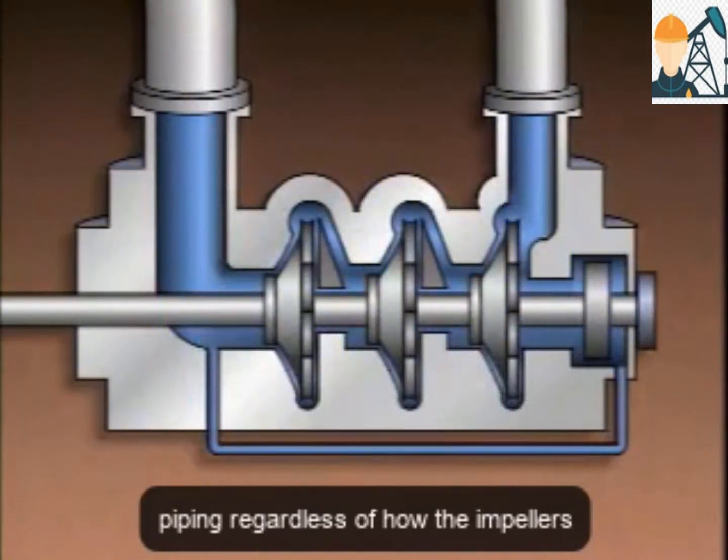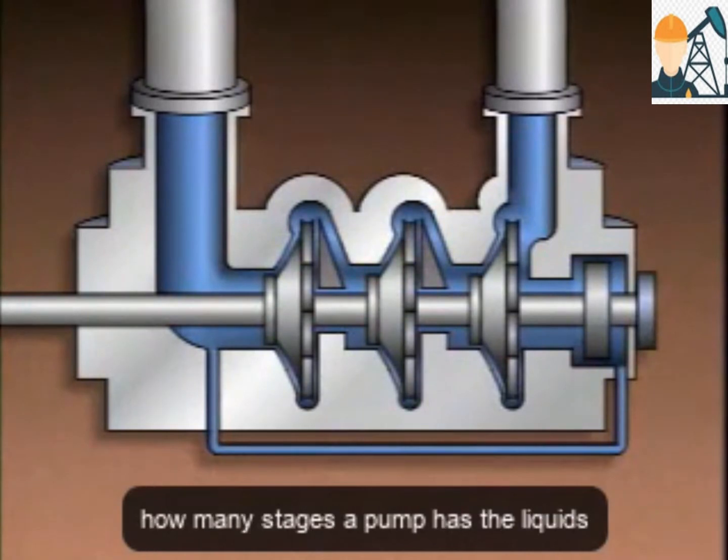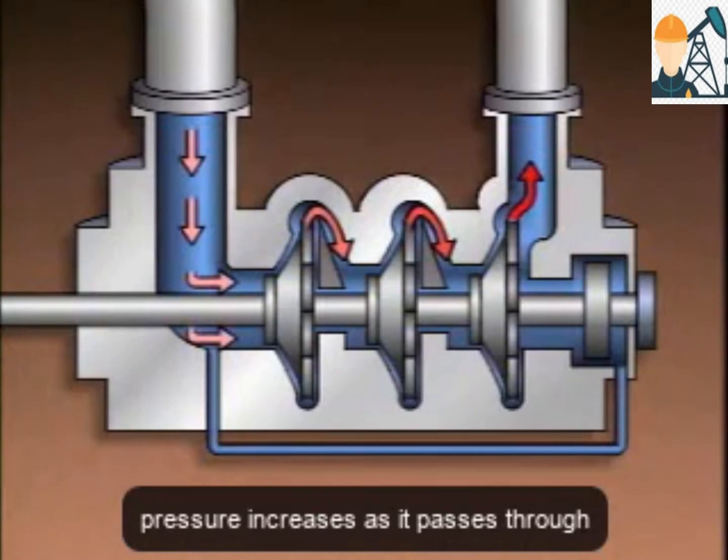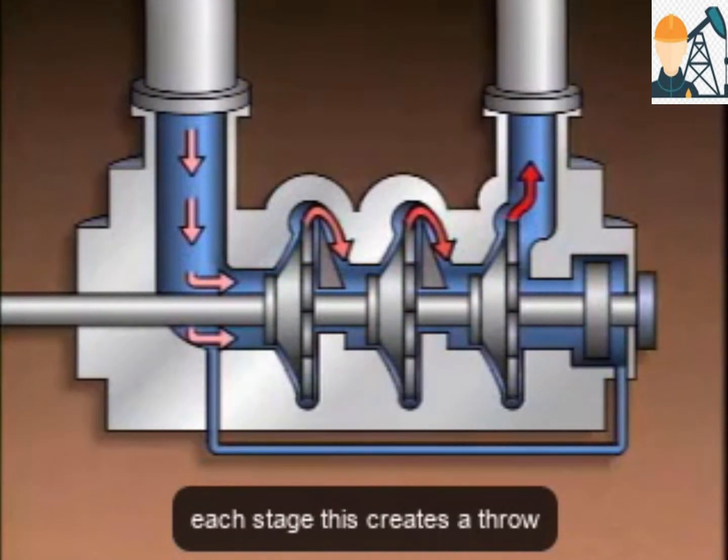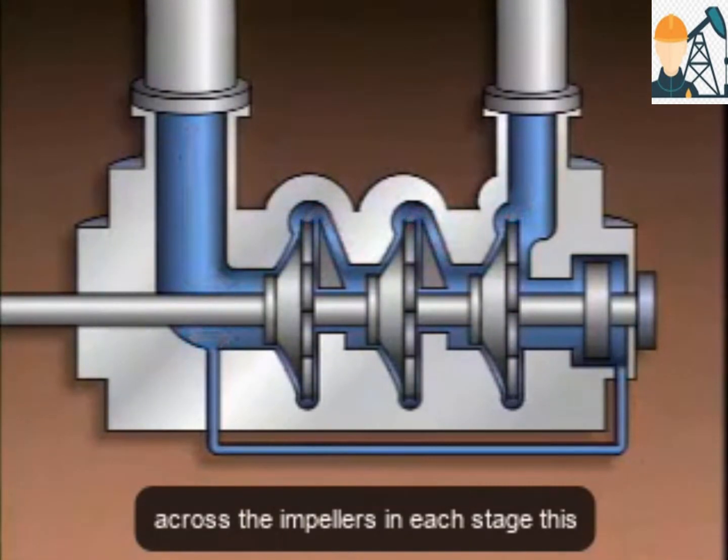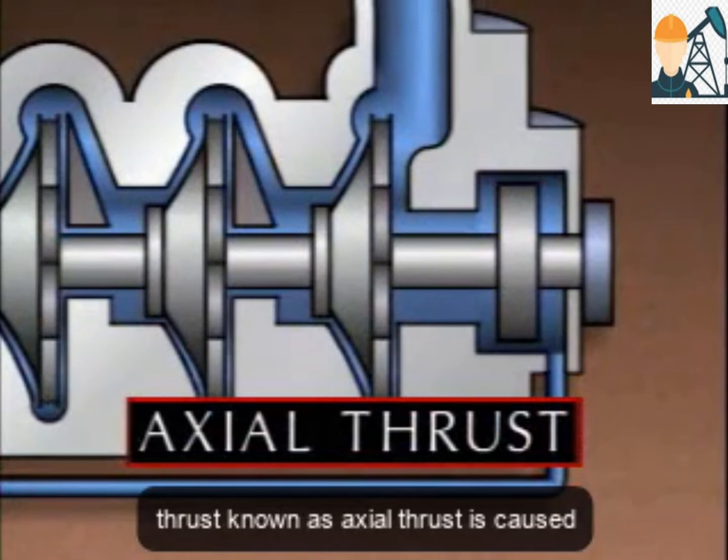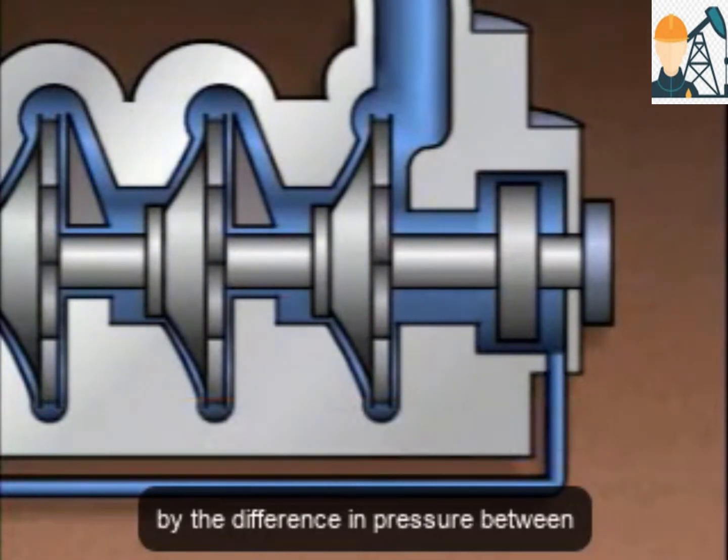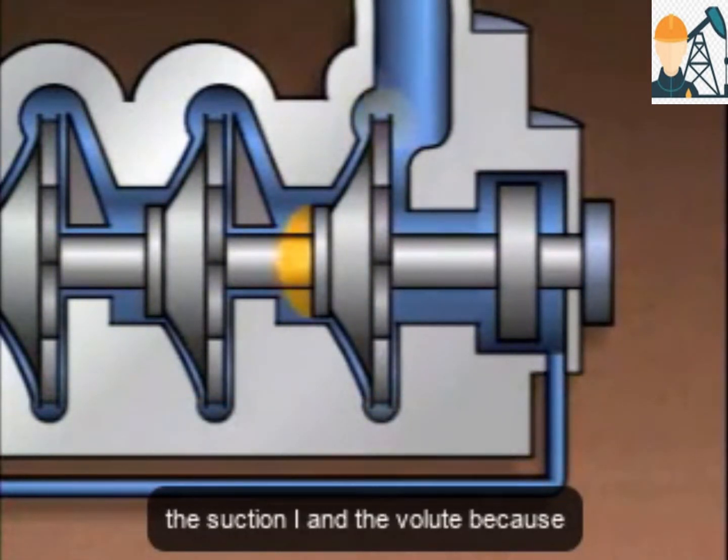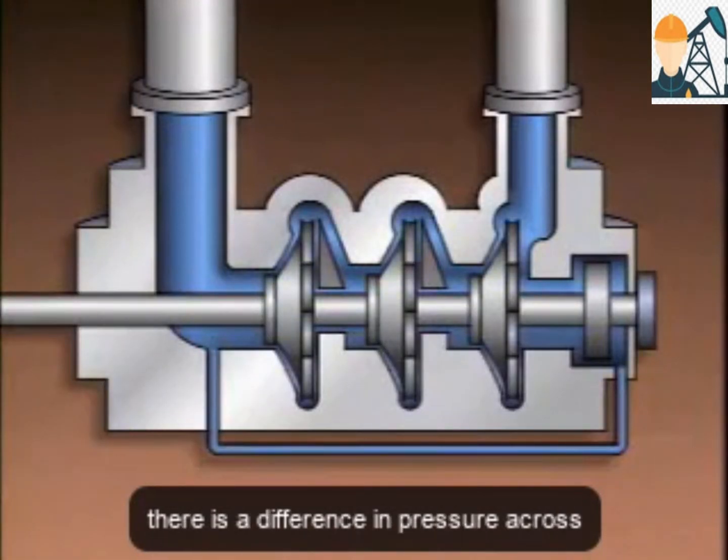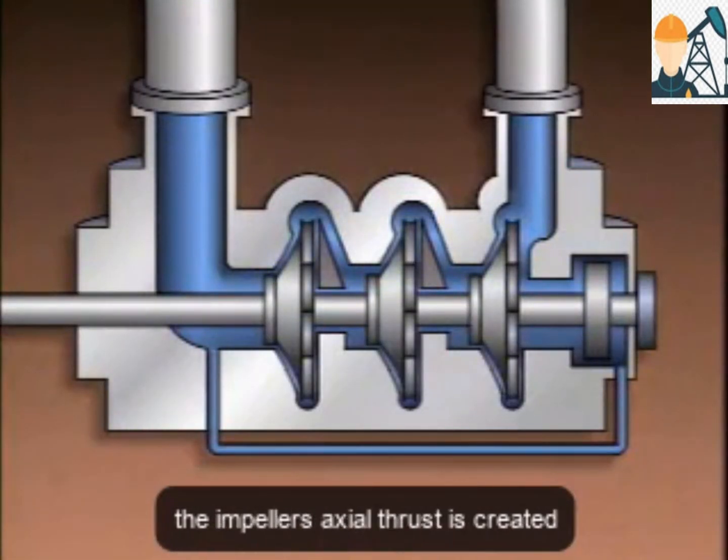Regardless of how the impellers on a centrifugal pump are arranged, or how many stages a pump has, the liquid's pressure increases as it passes through each stage. This creates a thrust across the impellers in each stage. This thrust, known as axial thrust, is caused by the difference in pressure between the suction eye and the volute. Because there is a difference in pressure across the impellers, axial thrust is created.